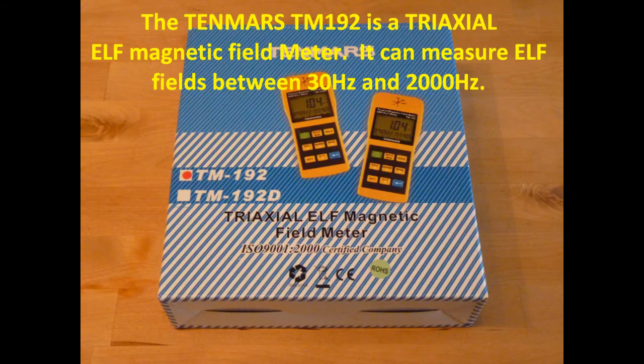The Tenmars TM192 is a triaxial extreme low frequency magnetic field meter. It can measure extreme low frequency fields between 30 Hz and 2000 Hz.